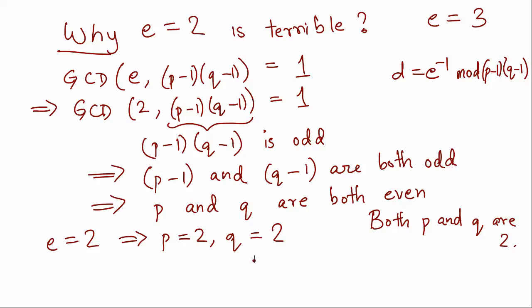So as soon as Eve, who is trying to intercept Alice's message to Bob, sees that Bob's e is 2, she immediately knows that Bob's p and q are both 2. And so she can find d equals e inverse mod (p-1)(q-1), because she knows Bob's e, p, and q.